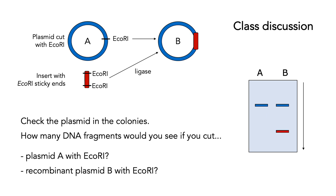Here are the expected banding patterns. In both cases you would expect to see the entire plasmid showing up as a single large band when cut with EcoRI. The difference is that for plasmid B you would also see a smaller band containing the inserted gene of interest. So: one large band for plasmid A; the same large band for plasmid B, but also, in addition, a smaller gene band.